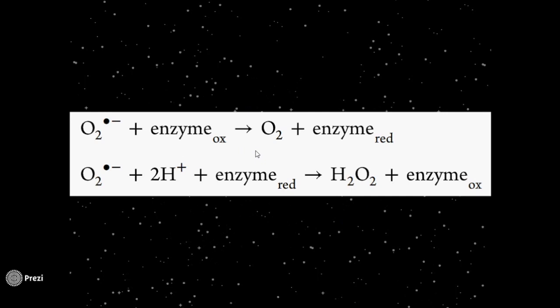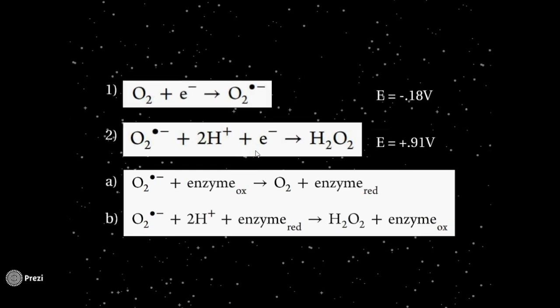Let's notice something interesting here. Since all manganese superoxide dismutase does is move around a couple of electrons, one can calculate the reduction potential of the reaction. Reaction A is merely the opposite of reaction 1, and reaction B is the same thing as reaction 2. Since the first reaction has a reduction potential of negative 0.18V and the second reaction's reduction potential is plus 0.91V, it makes sense that the electrons will proceed in this reaction.